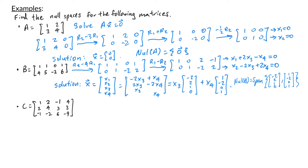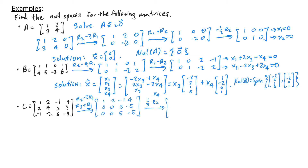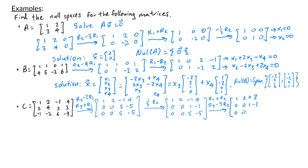In the last example, matrix C has entries [1, 2, -1, 4; 2, 4, 3, 3; -1, -2, 6, -9]. We do row 2 minus 2 times row 1 and row 3 plus row 1, giving [1, 2, -1, 4; 0, 0, 5, -5; 0, 0, 5, -5]. Then one fifth of row 2 gives [1, 2, -1, 4; 0, 0, 1, -1; 0, 0, 5, -5]. Finally, row 1 plus row 2 and row 3 minus 5 times row 2 gives [1, 2, 0, 3; 0, 0, 1, -1; 0, 0, 0, 0].